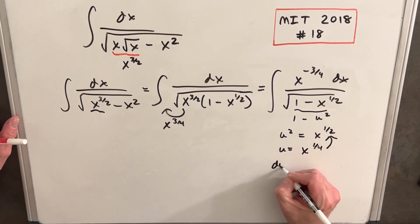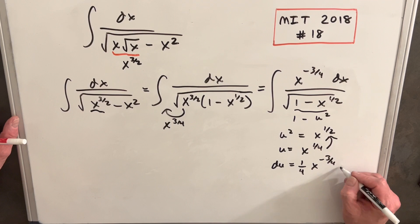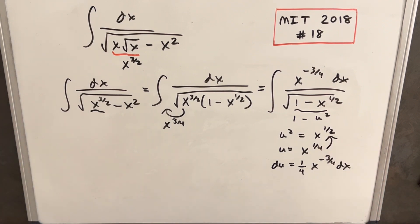Then let's take our derivative of this thing. So our du is going to be 1 fourth x to the minus 3 fourths dx. And that's perfect because that's exactly what we have.